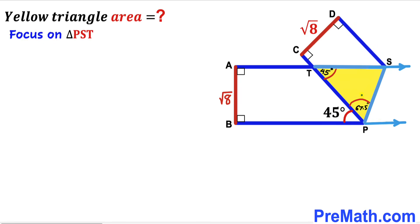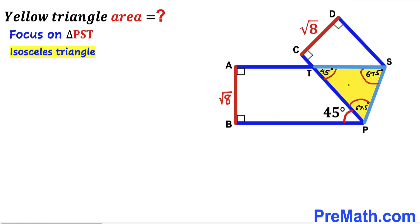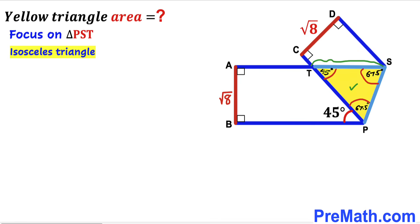Focusing again on the yellow shaded triangle PST, the sum of its three interior angles is 180 degrees. We know one angle is 45 degrees and another is 67.5 degrees, so the third angle is also 67.5 degrees. Since two angles are equal at 67.5 degrees, triangle PST is an isosceles triangle, meaning side ST equals side PT.